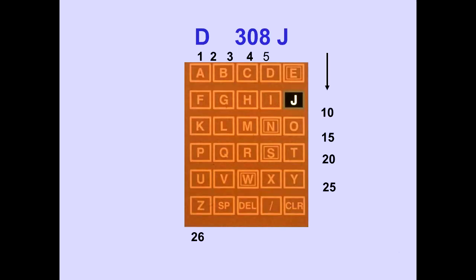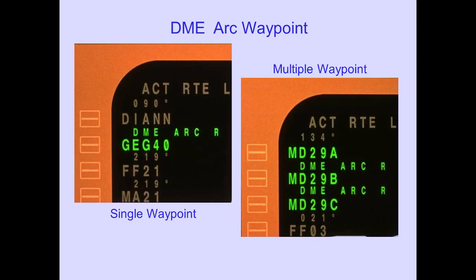Another way to determine the numeric value of a letter is by using the letters on the FMS-CDU. In this example, the distance of the DME arc from the VORTAC is the letter J, or 10 miles. When the DME arc is greater than 26 miles, a single DME waypoint is identified by the NAV-AID identifier and DME distance. Multiple DME waypoints are identified by the first two letters of the NAV-AID identifier, the DME distance, and a sequence letter. In these examples, a 40 DME arc is depicted for Spokane, GEG, and a 29 DME arc for Muddy Mountain, MDM.